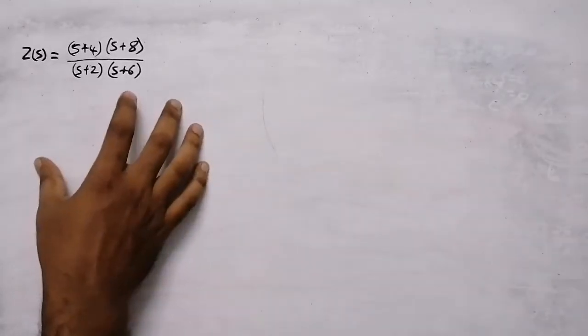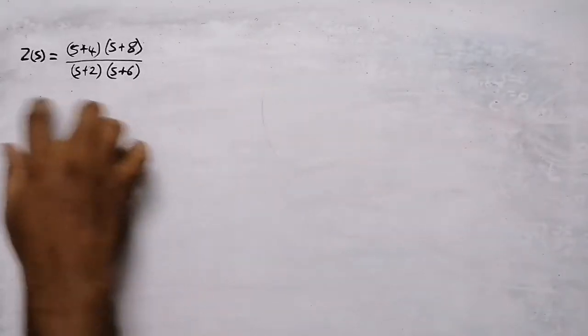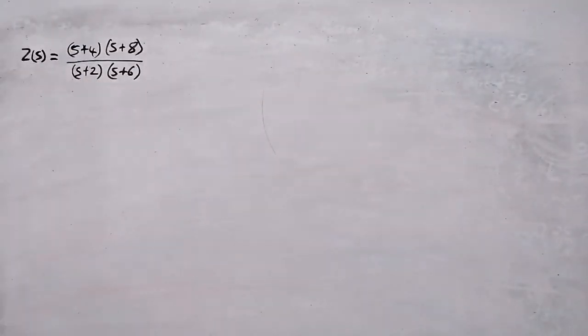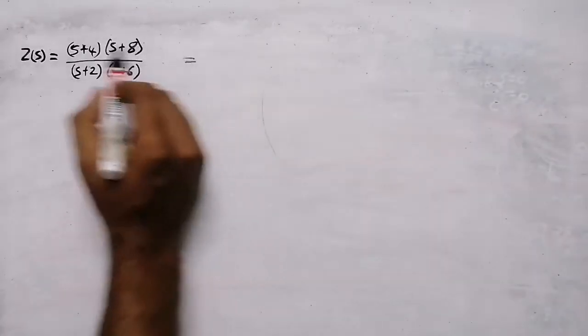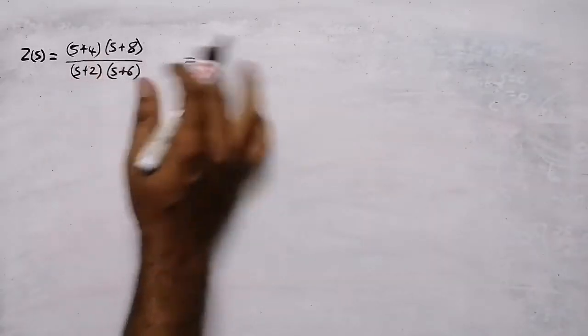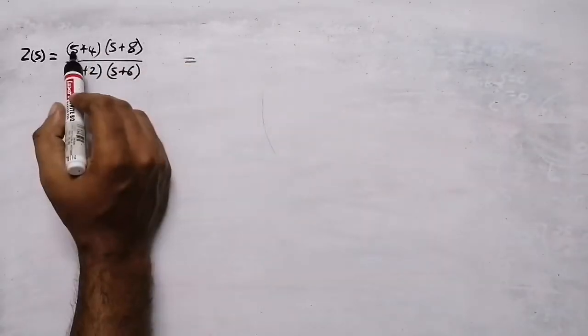We are going to find Cauer 1 and Cauer 2 forms of this impedance function. The first step is to open the bracket and write the equation.